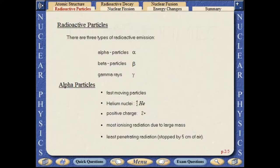There are three types of radioactive emission: alpha particles, beta particles, and gamma rays.